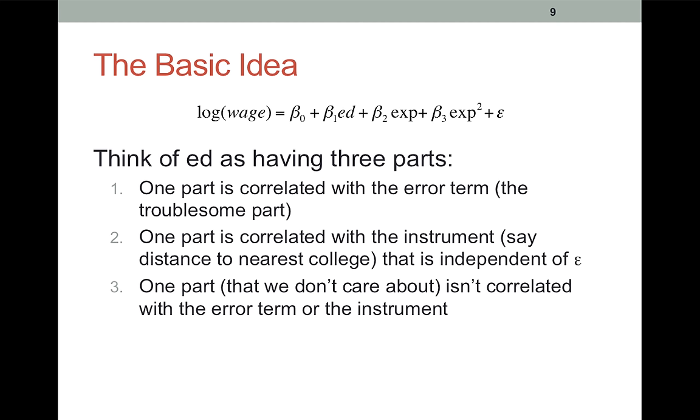So let's go back to our returns to education example. We can think about education, the endogenous variable, as being composed of three different parts. The first part, the part we don't like, is the part that's correlated with the error term. The second part is the part that's correlated with the instrument, say distance to nearest college. That is, the part that is induced by being close to a college or not being close to a college. Since we're considering that to be independent of the error term, distance to nearest college. And then the third part, we don't care about this at all, is the part that's not correlated with the error term and not correlated with the instruments.